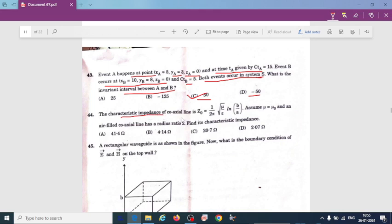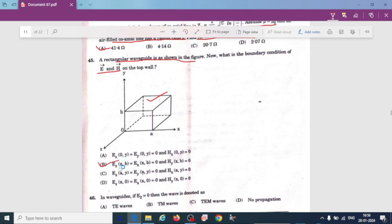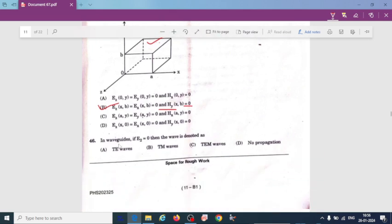The characteristic impedance of coaxial line is z0 equal to 1 divided by 2 pi root of mu divided by epsilon ln b by a. Assuming permeability is equal to free space and air filled coaxial line has a radius ratio equal to 2, find its characteristic impedance. So here the answer is 41.4 ohm. Rectangular wave guide as shown in figure. What is the boundary condition for E and H on the top of the wall? So here top of the wall we can consider this one. Then here option B is correct. E z at x comma b is equal to E x at x comma b is equal to 0, and the magnetic field along y axis at x comma b is equal to 0. If waveguide E z is equal to 0, the wave is denoted by transverse electric wave.